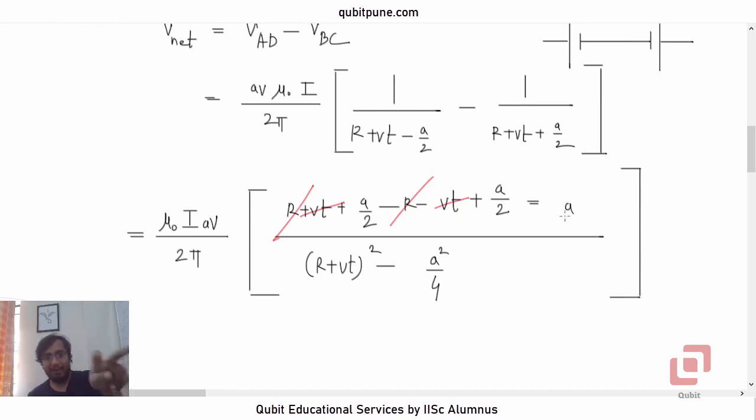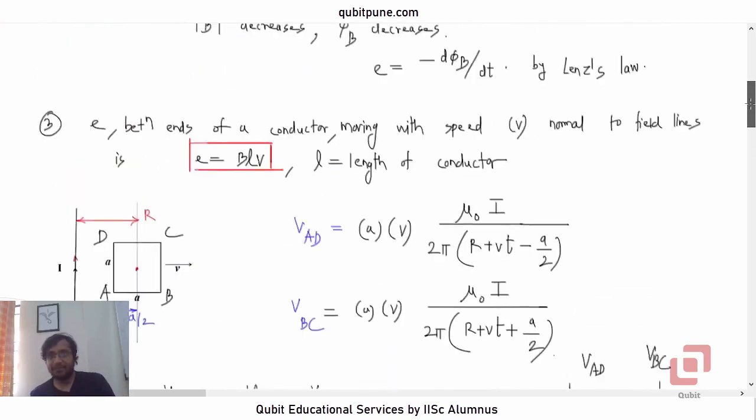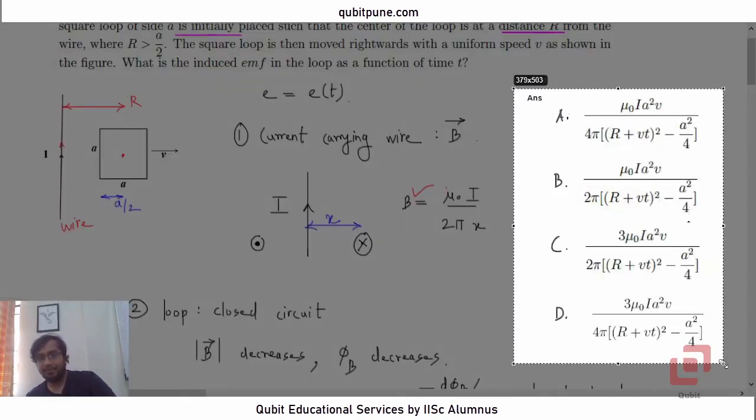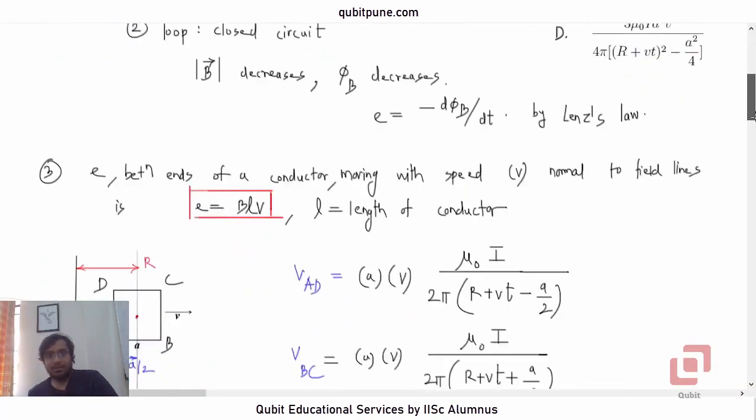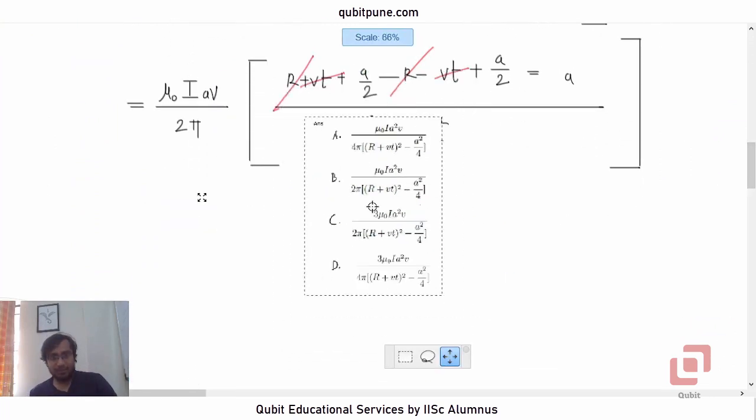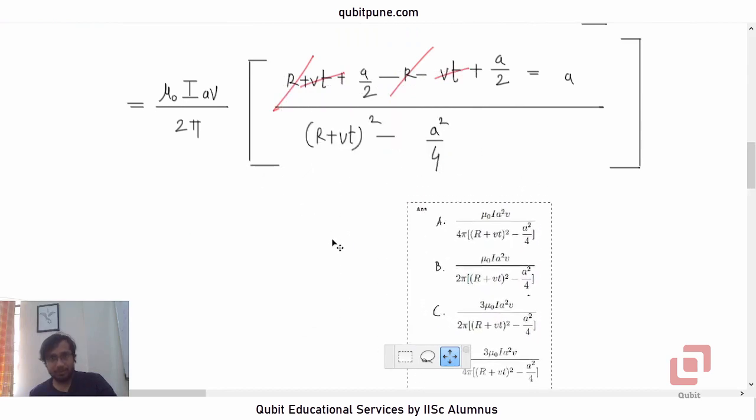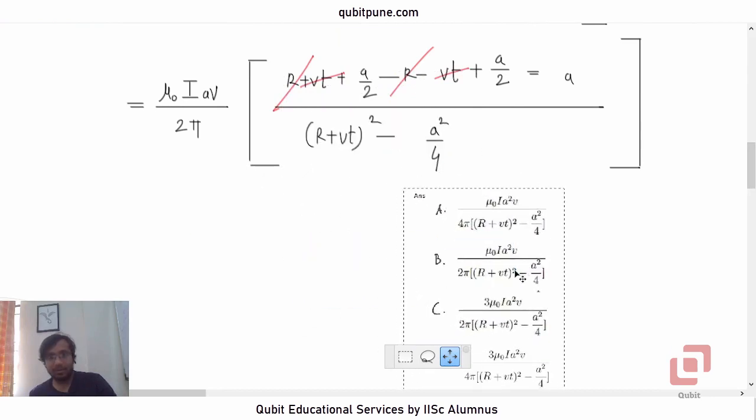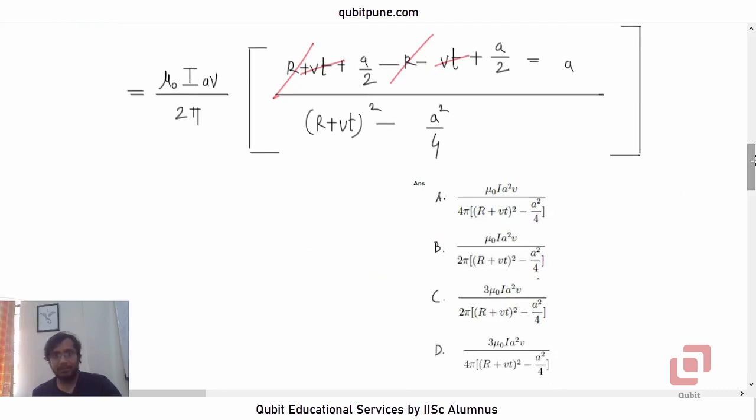So, do we have an option matching this? Let us see. These are the four options. These are the four options. Let me zoom them out so that we can pick the right one. Well, I guess mu naught I, A squared V is present in the numerator of all of them. Yes.